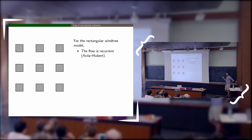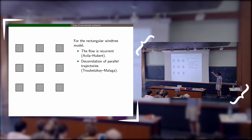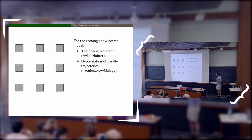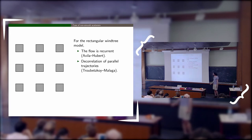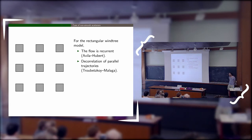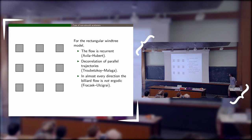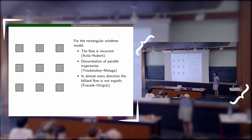Some results show that in some sense it behaves like Brownian motion. For example, there is a result of Avila and Hubert showing the flow is recurrent. Another result of Troubetskoi and Malaga addresses one of the first questions the physicists asked: if you take some points in these billiards and follow the billiard flow in parallel directions, does the direction of the flow decorrelate at some point? This is true for the rectangular wind tree for almost every direction. But there are also theorems showing that the wind tree model doesn't behave at all like Brownian motion: in almost every direction the billiard flow is not ergodic, as shown by Frączek and Ulcigrai.